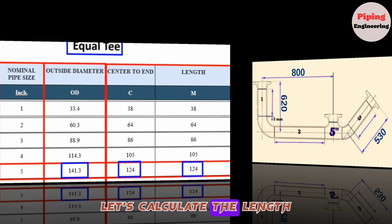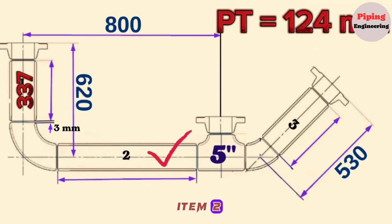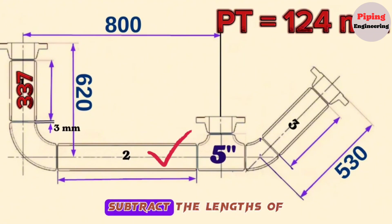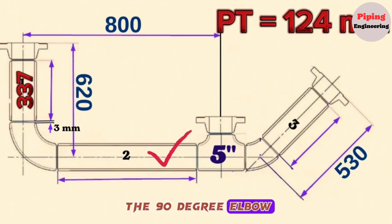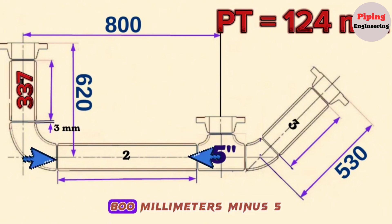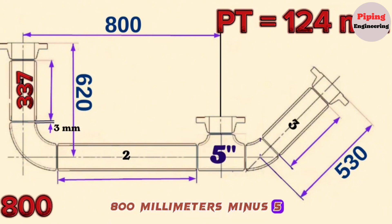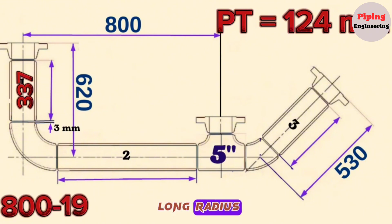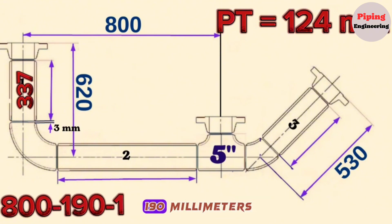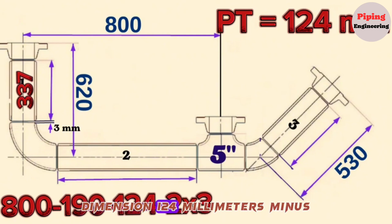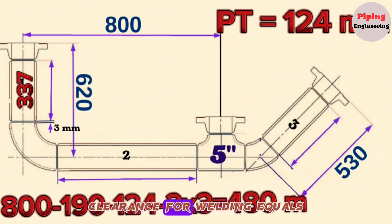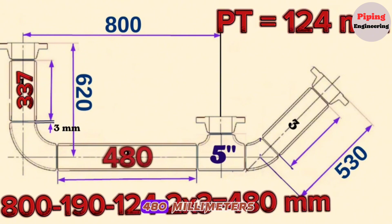Let's calculate the length of pipe piece Item 2. To find the length, subtract the lengths of the 90-degree elbow and the pipe tee from the total length. Overall length 800 mm, minus 90-degree long radius butt weld elbow 190 mm, minus 5-inch equal pipe tee 124 mm, minus 2 × 3 mm welding clearance, equals 480 mm.